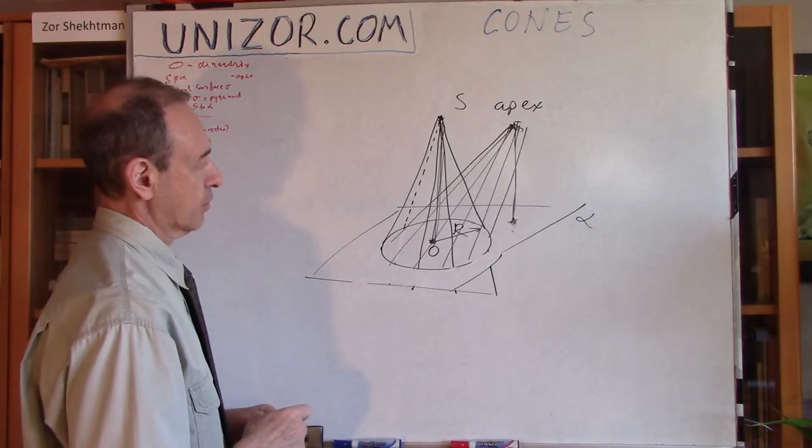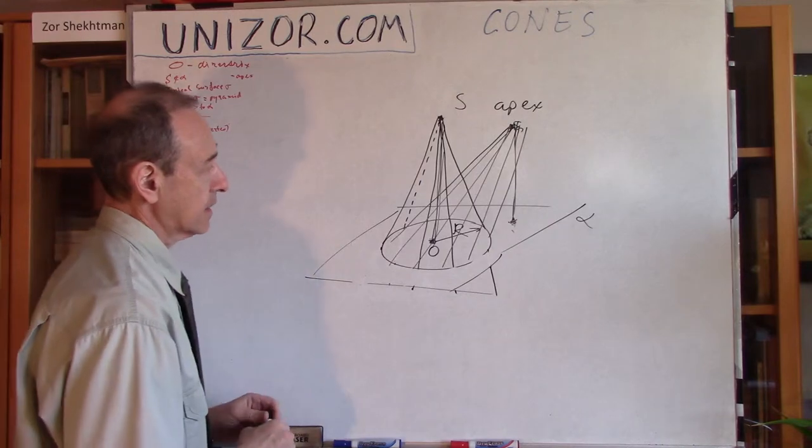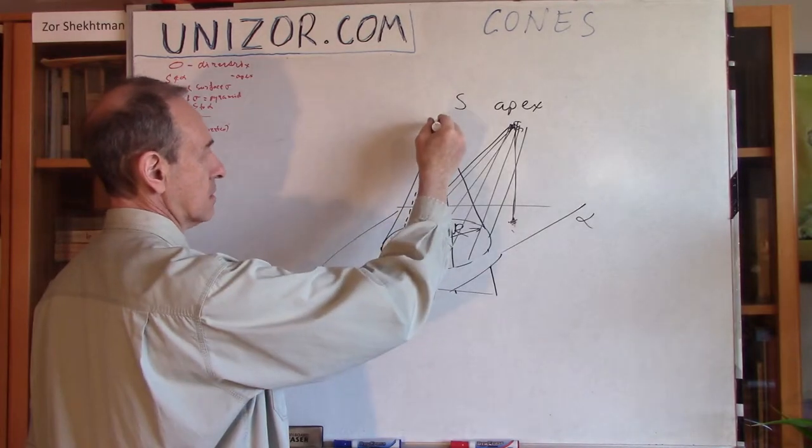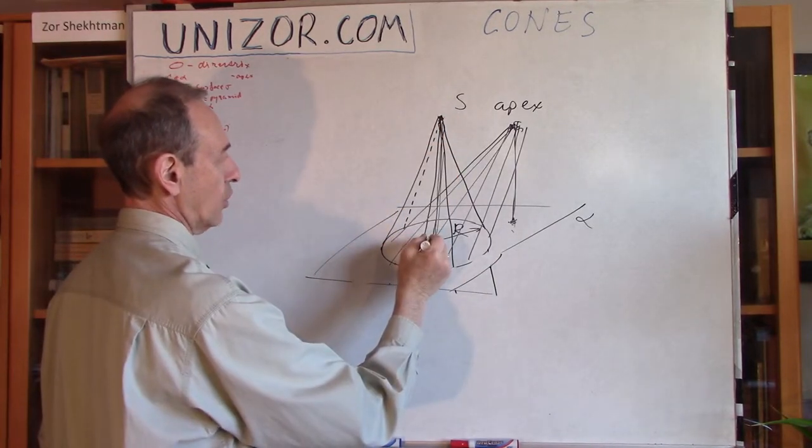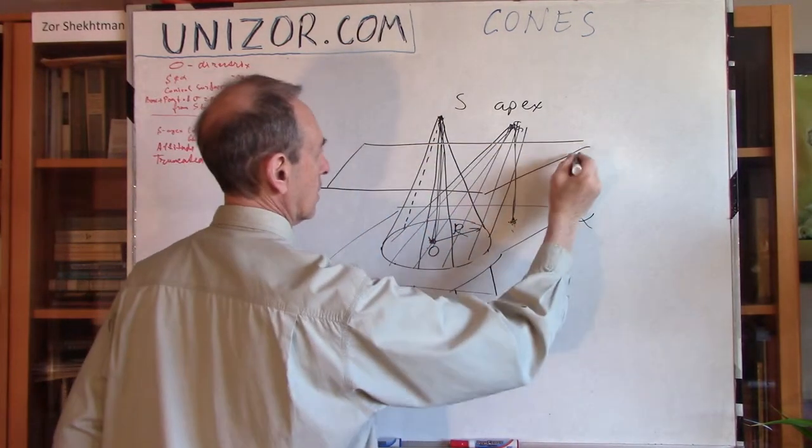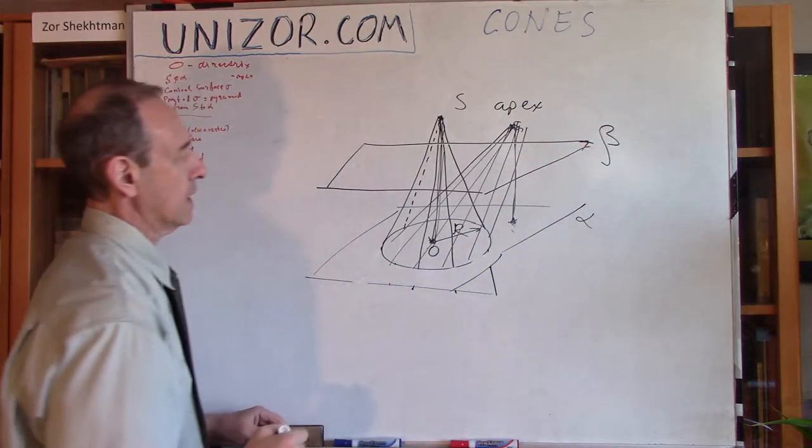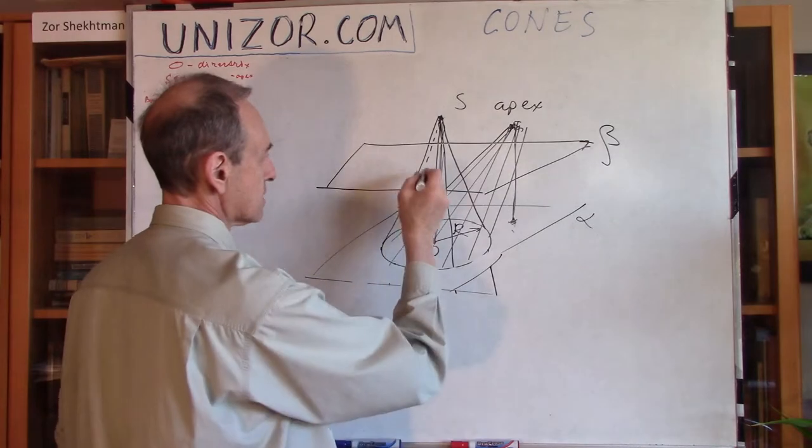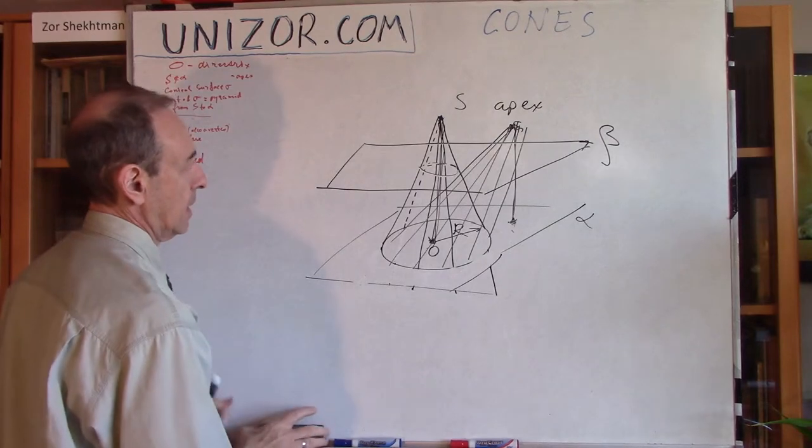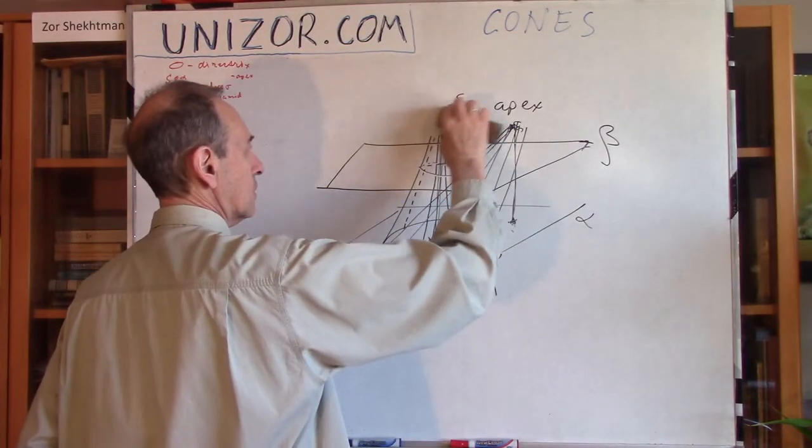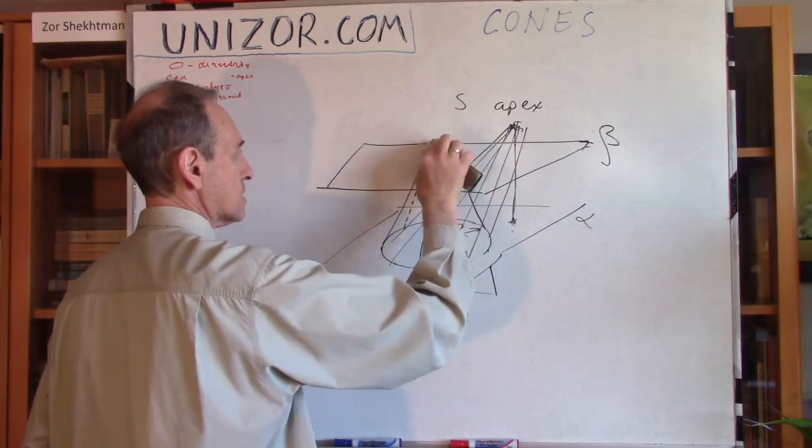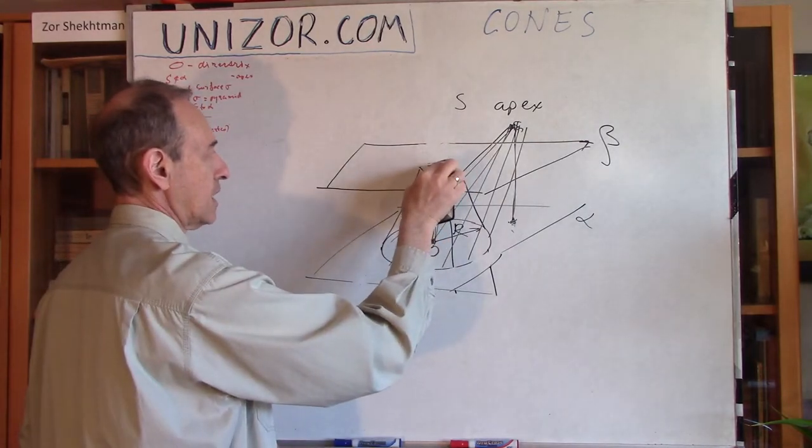What else is important? Okay, what's important is that we can actually have another plane which intersects the altitude of this cone, and it's parallel to the plane alpha. Now, it intersects somewhere here. And let's just cut off the top. What is this? Well, this is a truncated cone.